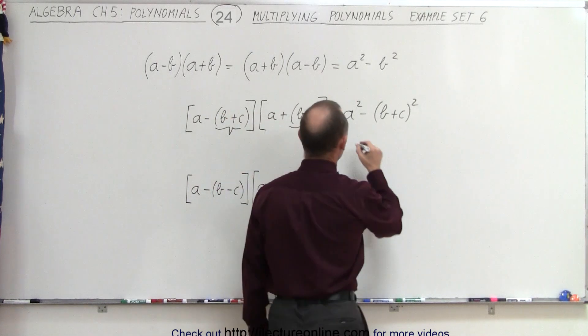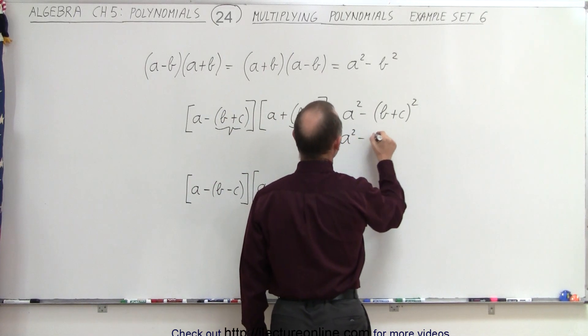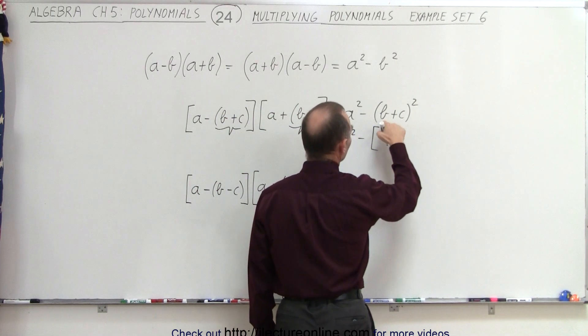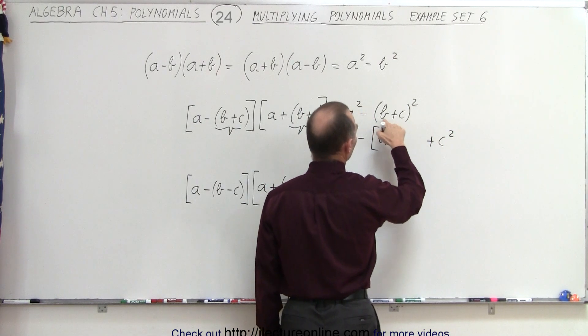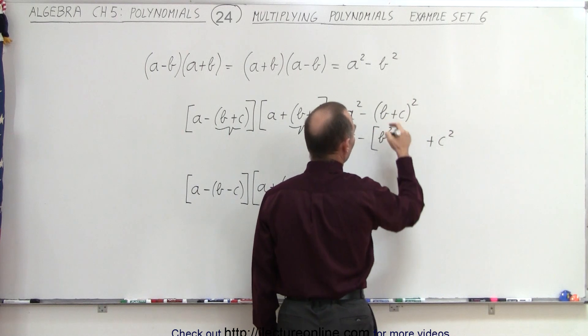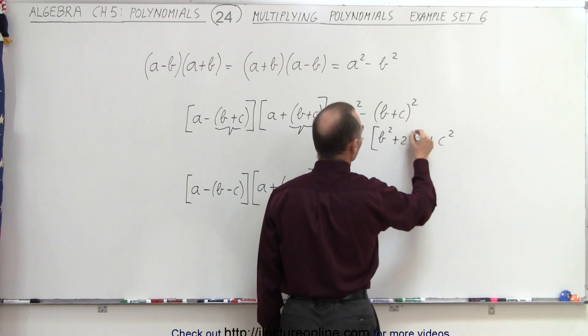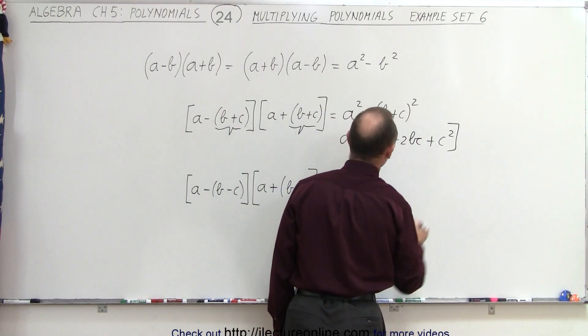So this would then become a squared minus, and let's put it in brackets, this would be the first term squared, plus the last term squared, plus twice the product of the two, that would be two times bc, like this.